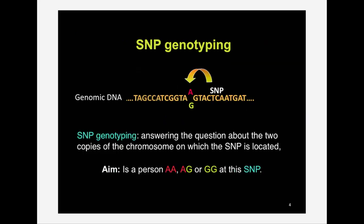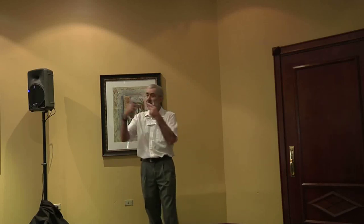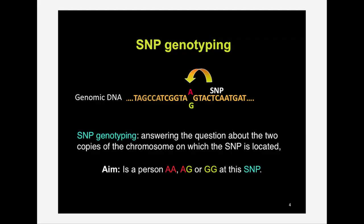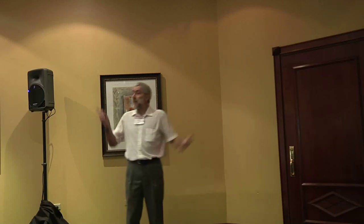By contrast, SNP microarrays are trying to answer the question: is a particular sequence of DNA an A or a G, for example, at a particular position? If you feed these microarrays a reasonable number of copies of a particular nucleic acid sequence that has a variable position somewhere in it, SNP genotyping will answer the question. It's a little more complicated because we're diploid organisms — it might be two As, two Gs, or an A and a G. The SNP microarray technology is designed to answer that question for maybe a million SNPs from one individual sample.